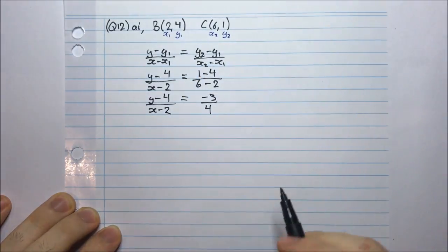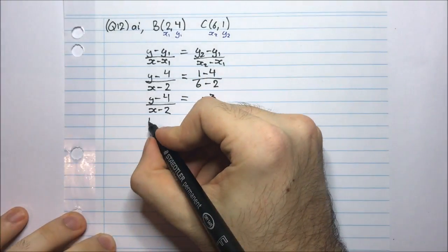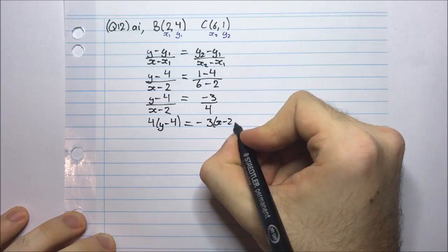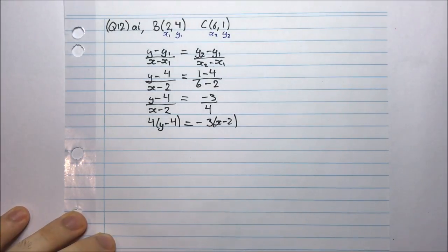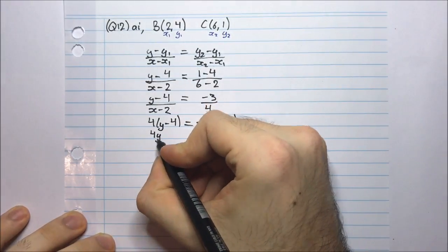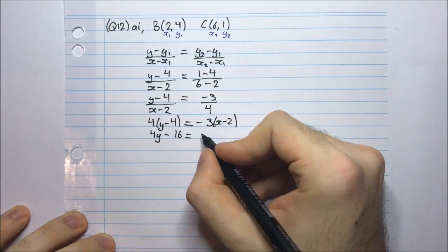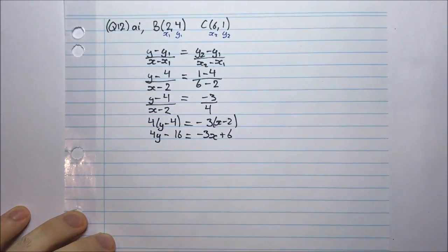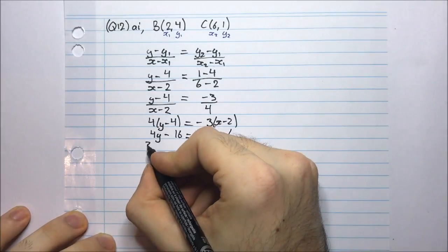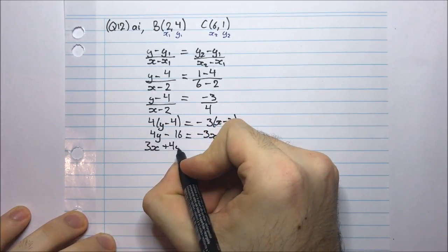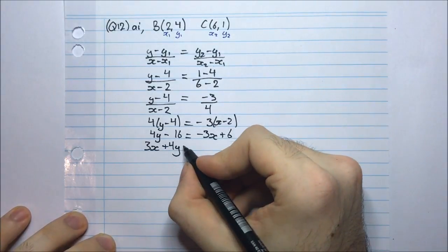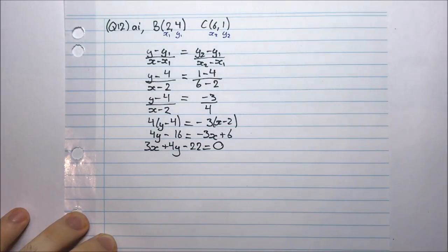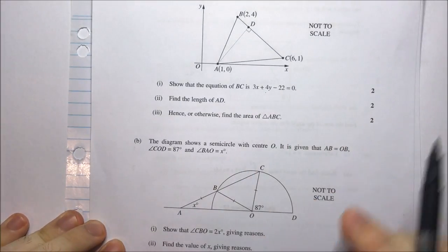I want to cross multiply to get rid of these fractions. So I have 4 times (y minus 4) equals negative 3 times (x minus 2). Expanding this out: 4y minus 16 equals negative 3x plus 6. Bringing everything over to the left-hand side gives 3x plus 4y minus 22 equals 0, and that is the equation we needed to show.